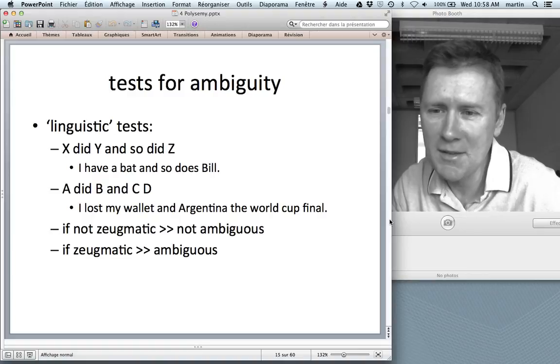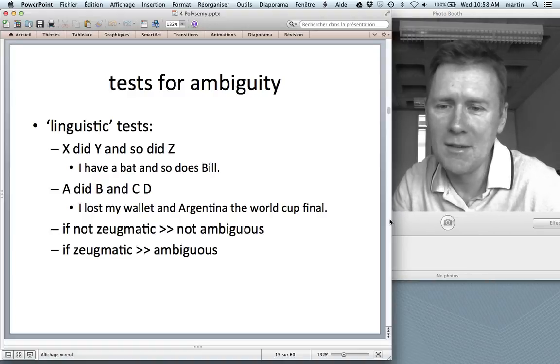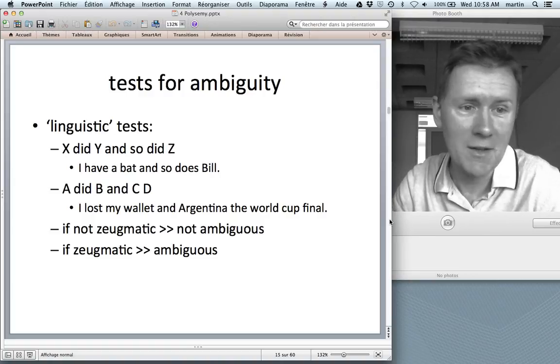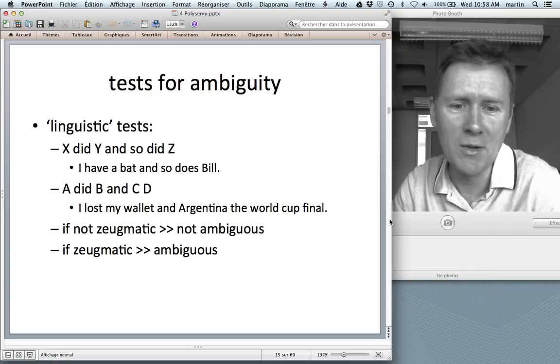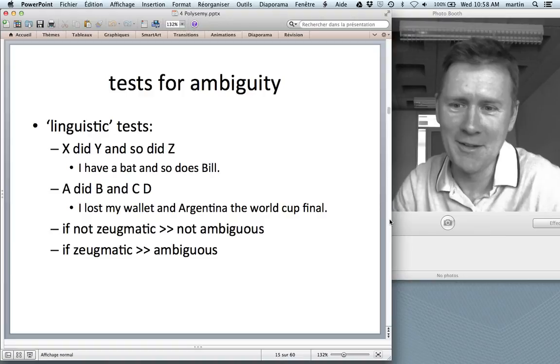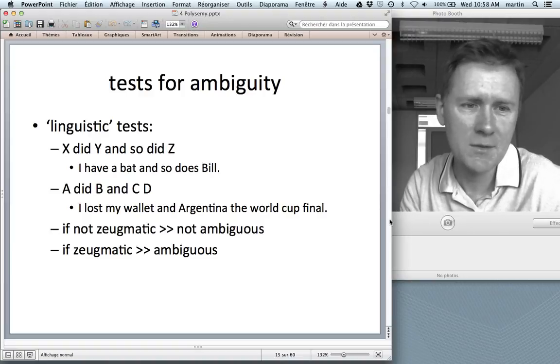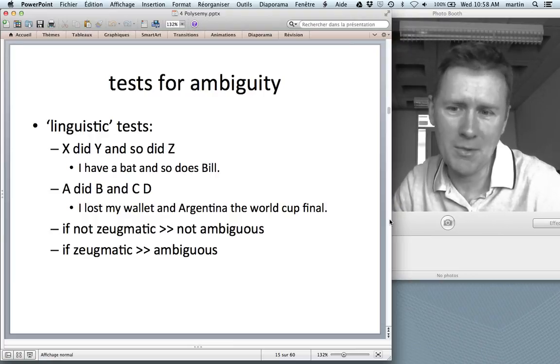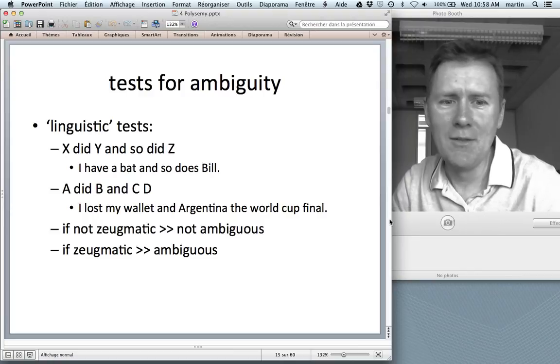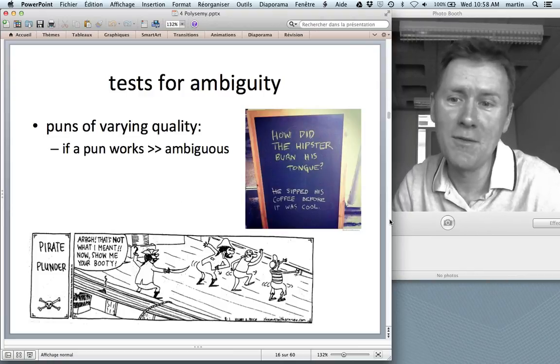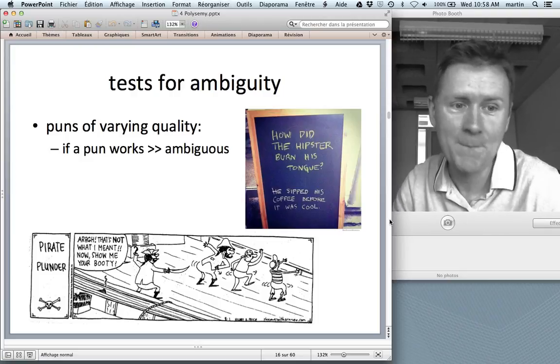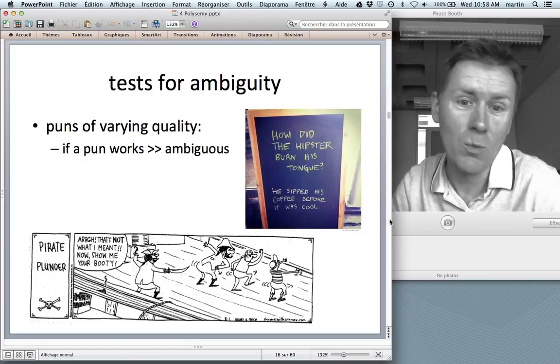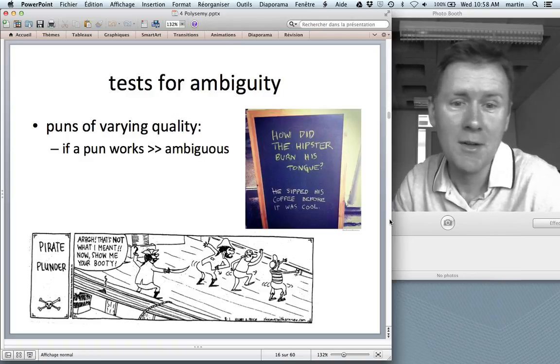Another linguistic test is the so-called gapping test. So that's the sentence A did B and C, D. So between C and D, there's a gap syntactic terminology. If I say I lost my wallet in Argentina, the World Cup final, you're saying, oh, Martin, you're so tongue in cheek today. So lose a wallet and lose a soccer game. They're not quite the same. Lose is ambiguous because you get this Zeugmatic effect. Then there are puns of varying quality. So how did the hipster burn his tongue? You guessed it. He sipped his coffee before it was cool. So if a pun works, that means that the word you're testing is ambiguous. So cool is ambiguous.